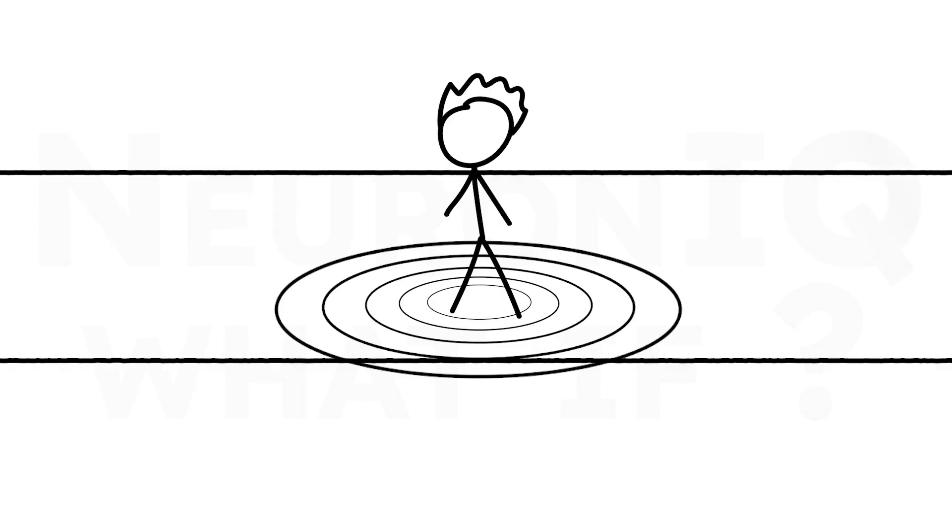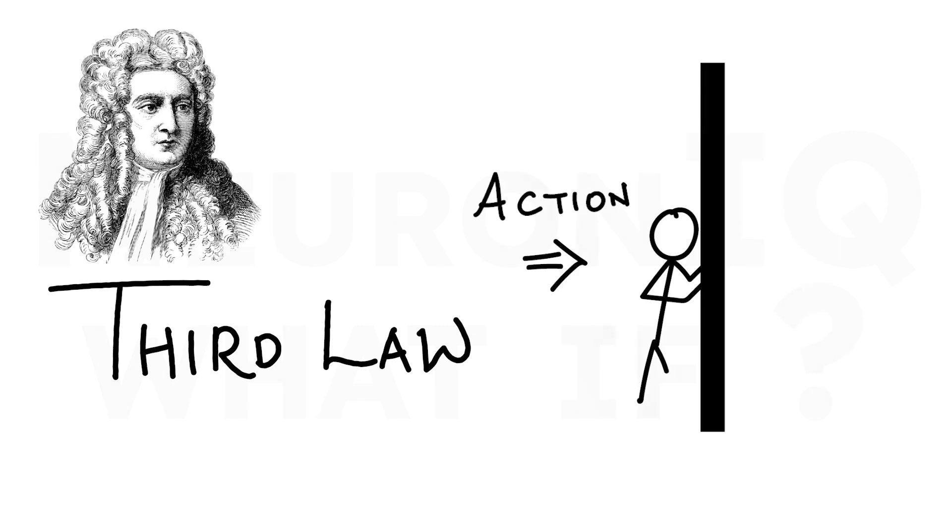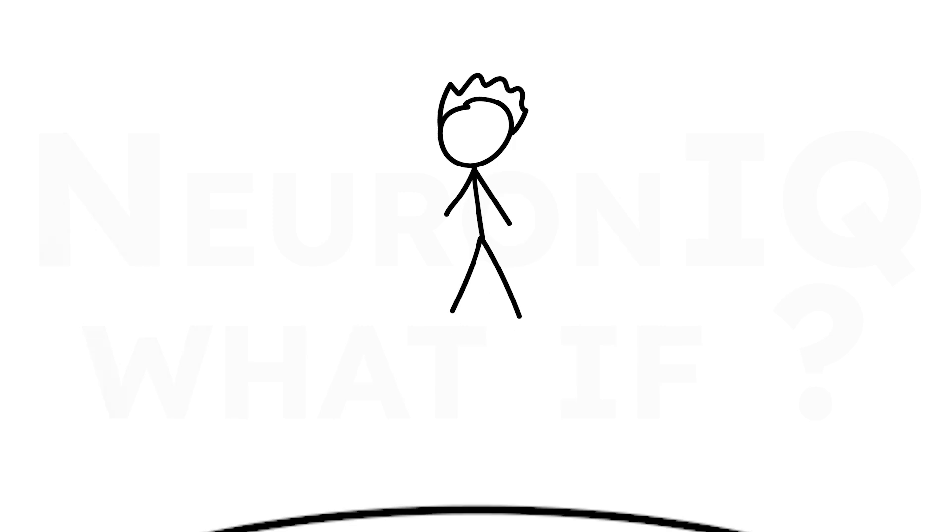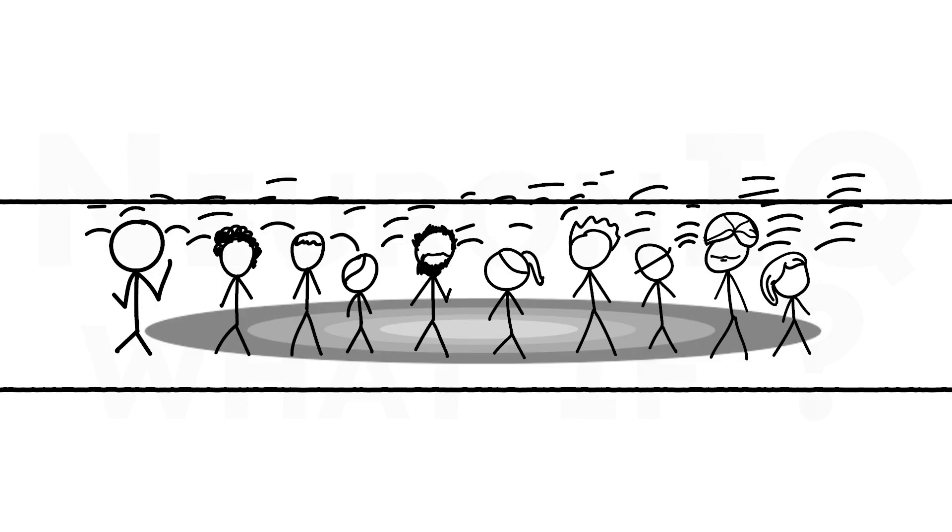When a person jumps, they apply force downward on the ground. Newton's third law tells us that for every action, there is an equal and opposite reaction. So when we push down on the Earth, the Earth pushes back up with equal force. Multiply that by 8 billion people, and you've got a significant amount of energy being transferred into the ground.